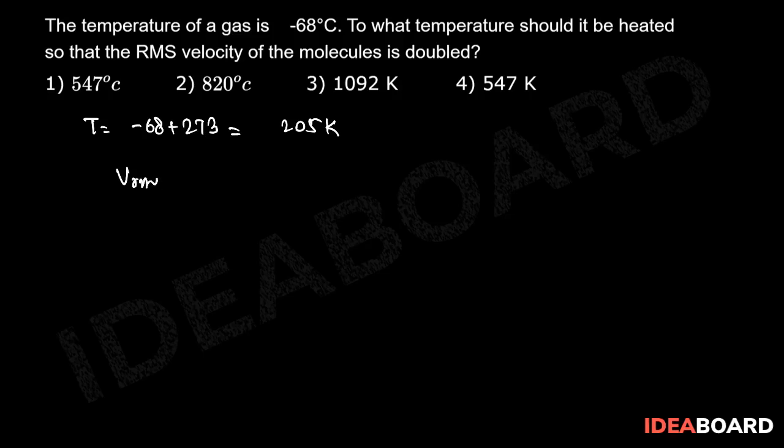We know that V_RMS is proportional to the square root of temperature. Therefore, we can write 1/2 equals the square root of 205/T.